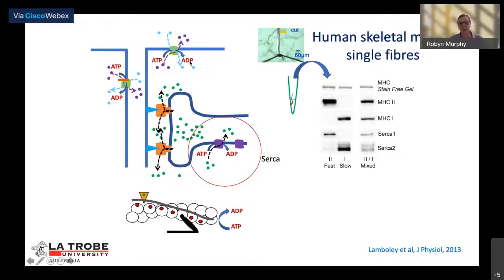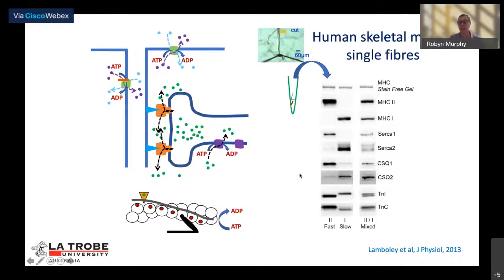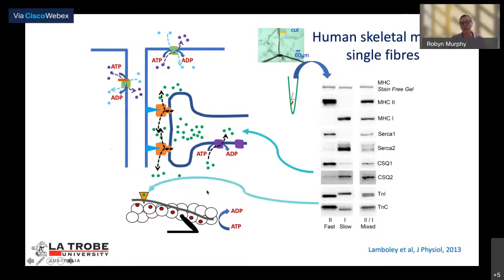SERCA1, the fast-twitch isoform, is present when you have myosin heavy chain 2, and SERCA2 is present with myosin heavy chain 1 or a combination — so the sarcoplasmic reticulum is also fibre type dependent. Similarly, calsequestrin, the calcium binding protein within the SR, has fibre type specific isoforms, as do troponin proteins at the contractile apparatus. These are isoform specific depending on fibre type.